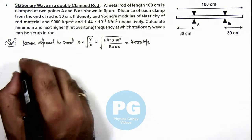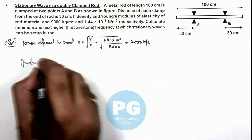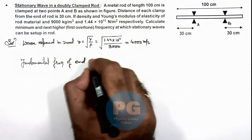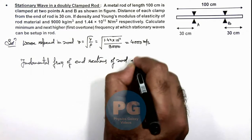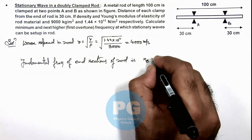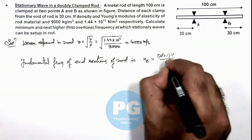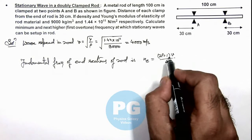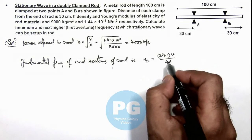And if we calculate the fundamental frequency of end sections of rod, this can be written as n_e, which we can write as (2p + 1) v / 4L. That is odd multiples of any integral value—odd integer multiplied by v / 4L. And here v / 4L is the fundamental frequency.